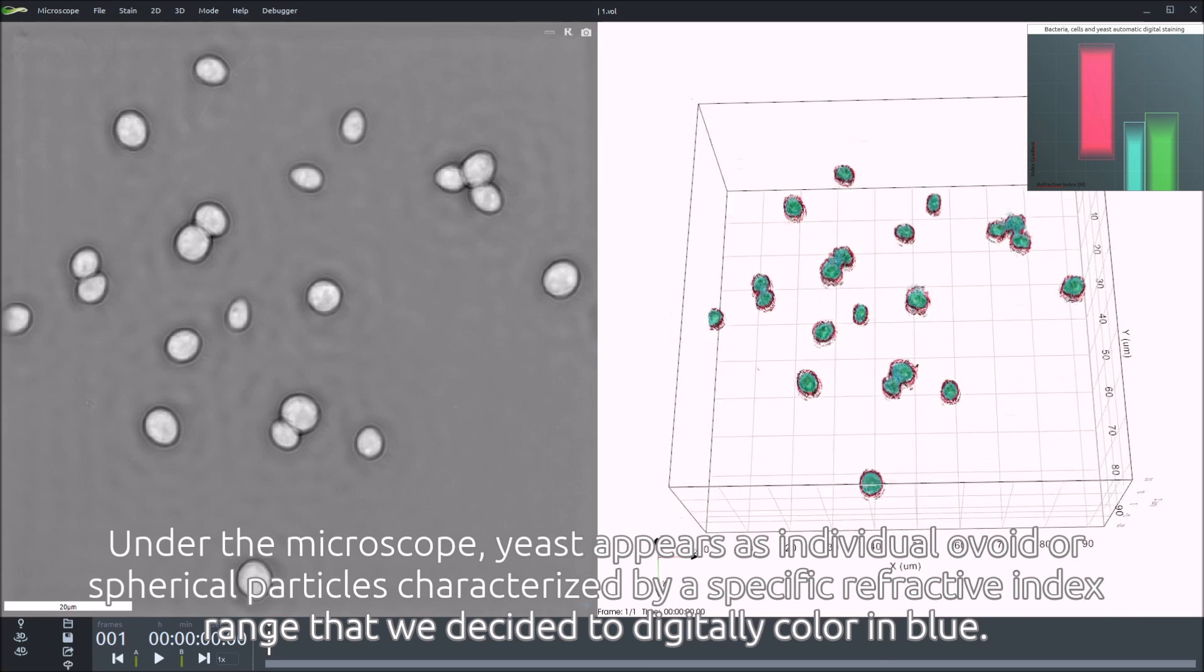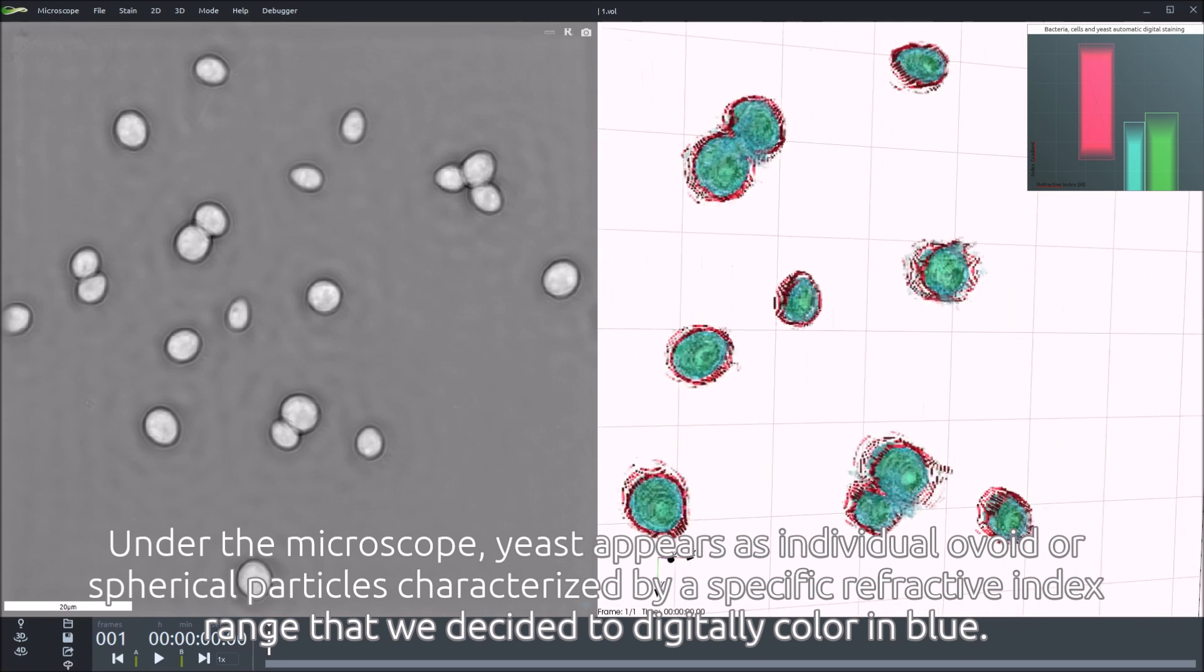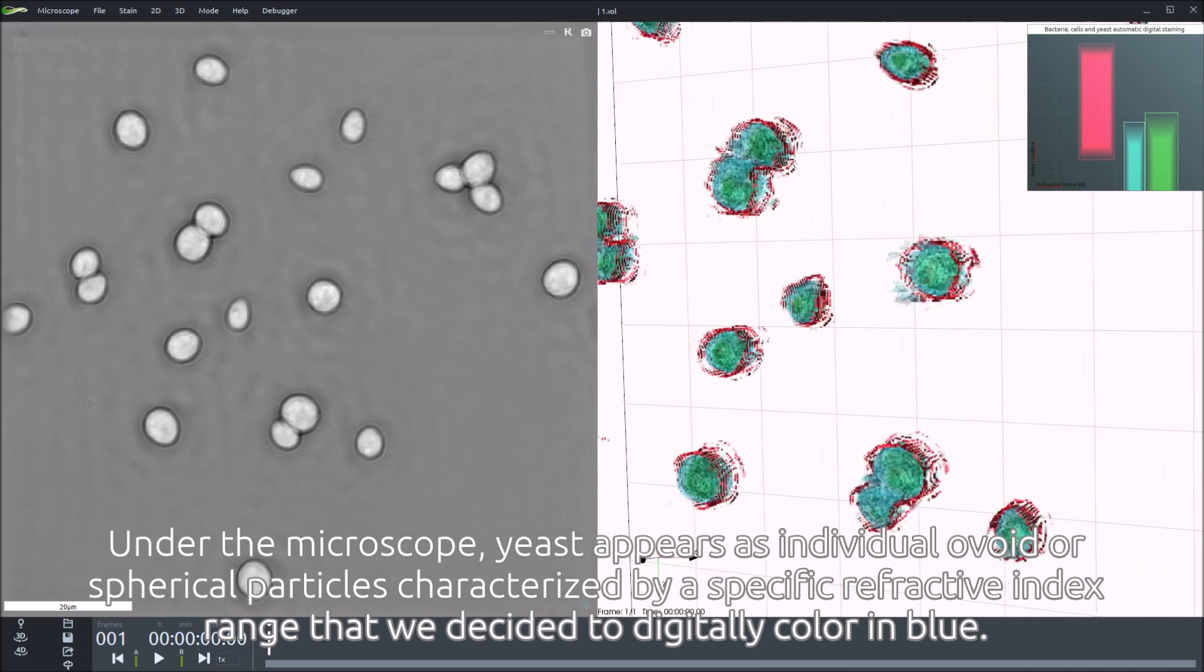Under the microscope, yeast appears as individual ovoid or spherical particles, characterized by a specific refractive index range that we decide to digitally color in blue.